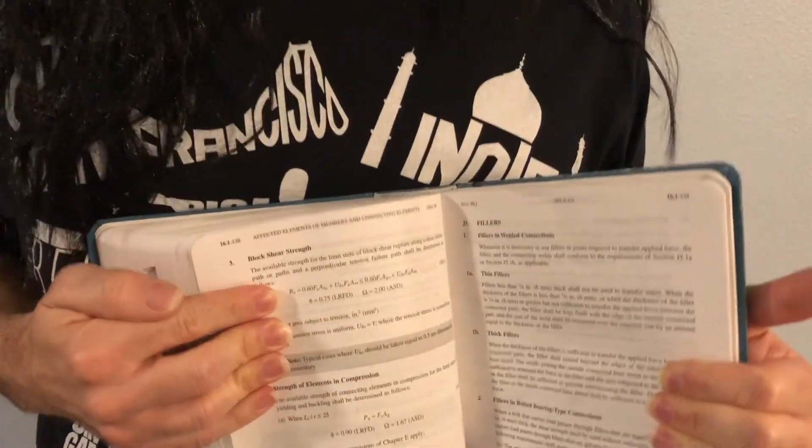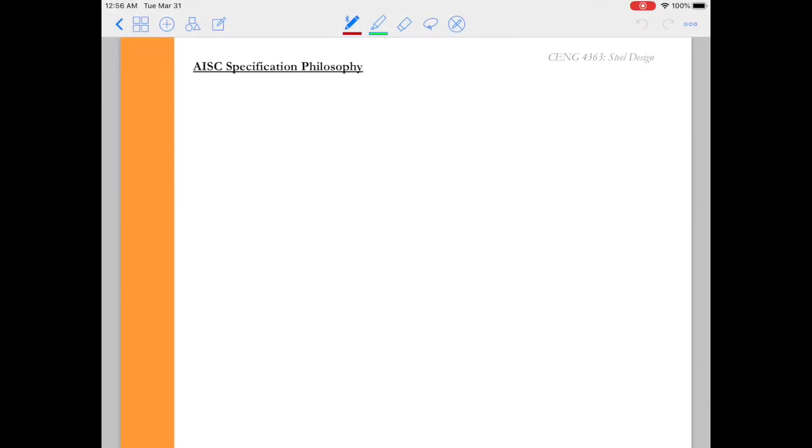You can see there we got this long complicated equation. So let's see where all these different terms in the equation come from. So how does the AISC specification handle block shear? As we discovered about block shear, block shear assumes that we have failure that occurs by rupture on the shear area and we have rupture on the tension area.